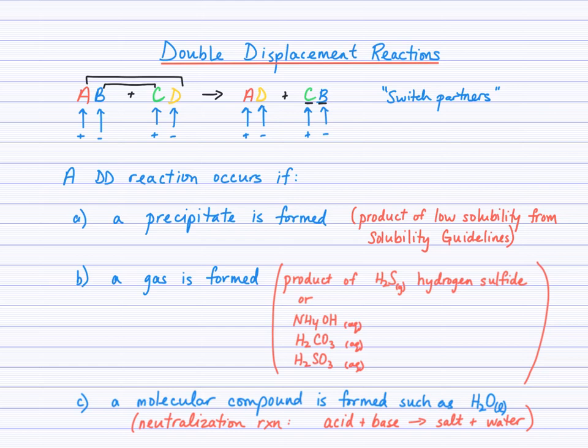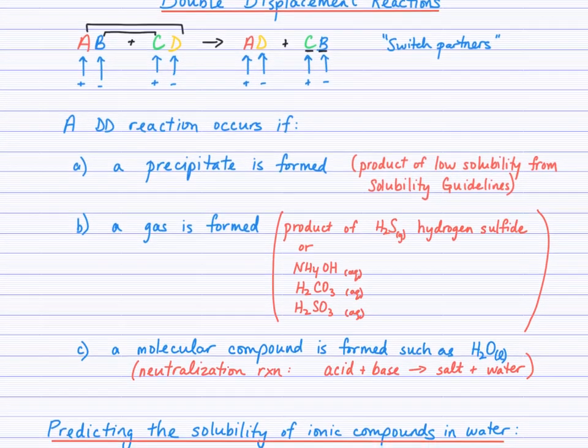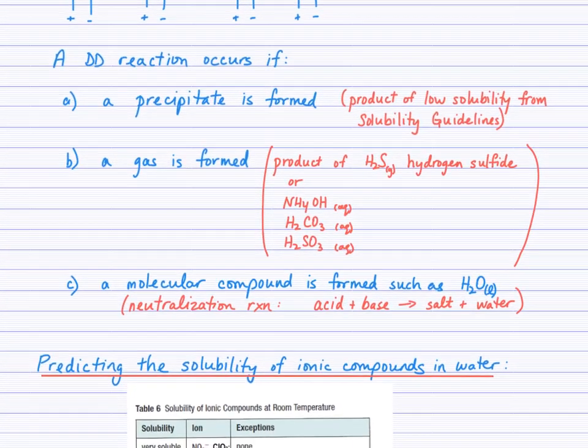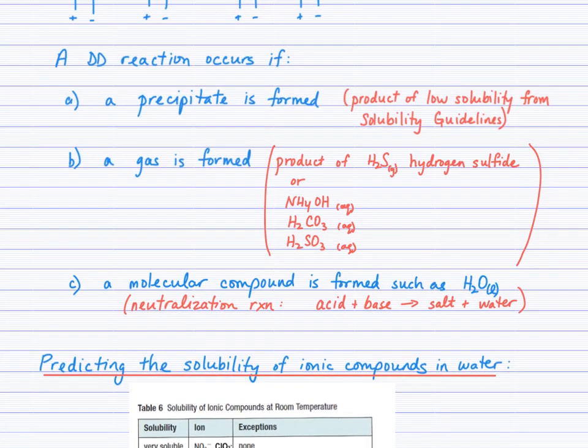There are three options for producing products in a double displacement reaction. First, a precipitate may be formed. There are solubility guidelines that tell us how to interpret those. Those solubility guidelines will inform you if a precipitate is formed — we're looking for a product of low solubility. The second possibility is that a gas is formed.